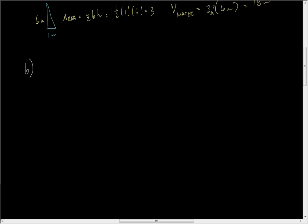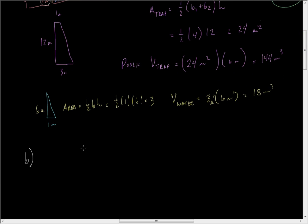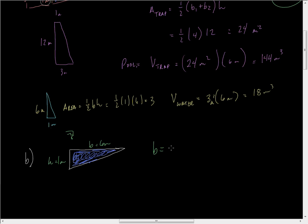Part B asks at what rate is the water level rising — and here you have to employ a little trick. At this particular moment, the six meters I called the 'width of water' along the pool's length is actually six times the height measurement. I'll redraw this: we have a small triangle of water. The height here equals one meter and the base equals six meters, so at this moment the base is equal to six times the height.